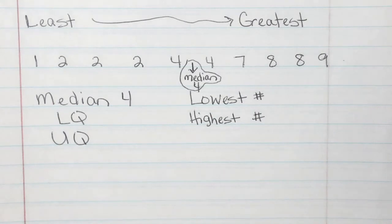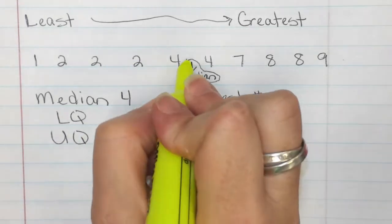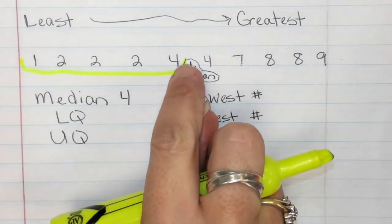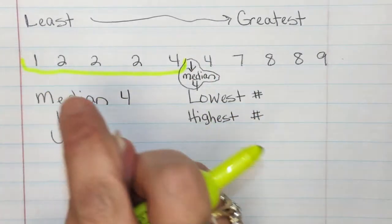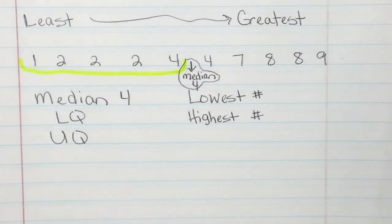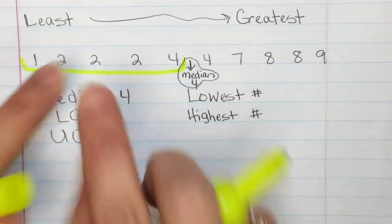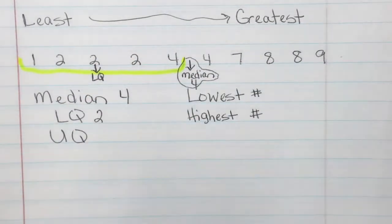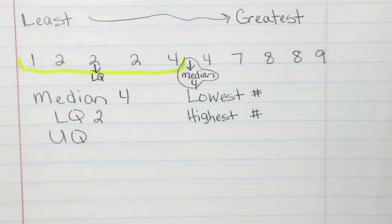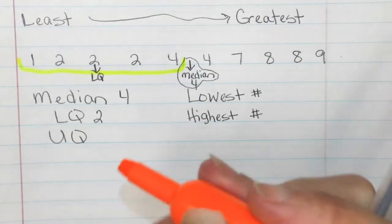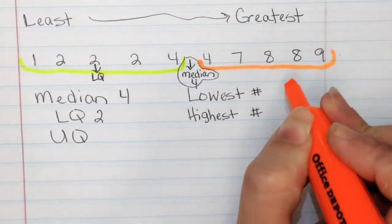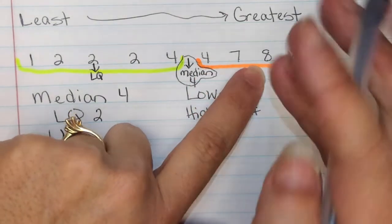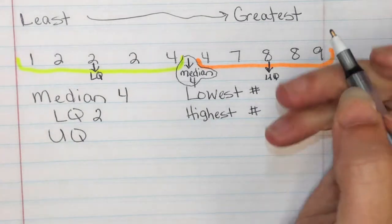Now a few of you were absent last week, so let's talk LQ and UQ. LQ is going to be all the lower numbers — everything from the median down. Starting with that four because it wasn't your median, go down to the lowest number and find the median of those numbers. That two right there is the LQ — the lower quartile, the median of the lower numbers. The UQ is the upper quartile — take the upper numbers and find the median of those numbers.